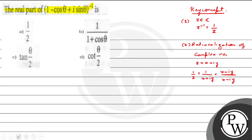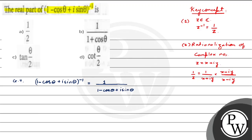So, this is the key concept to solve the problem. First, given that we have 1 minus cos theta plus i sine theta, whole inverse. So, z inverse equals 1 by z, and there is 1 divided by (1 minus cos theta plus i sine theta).